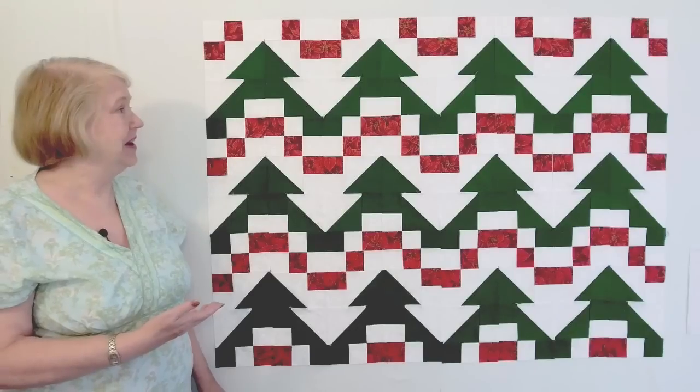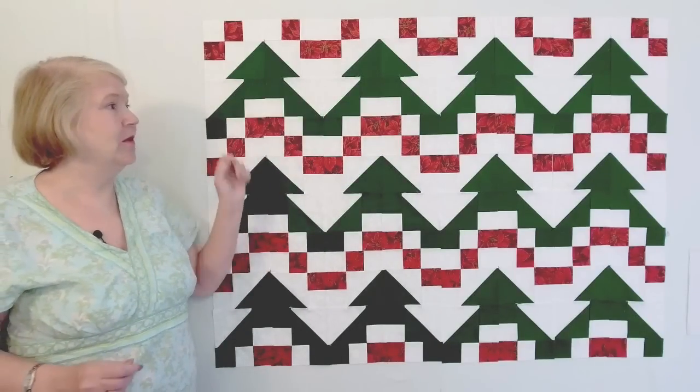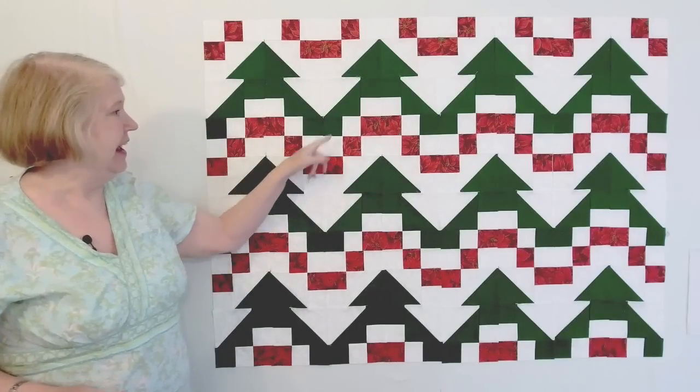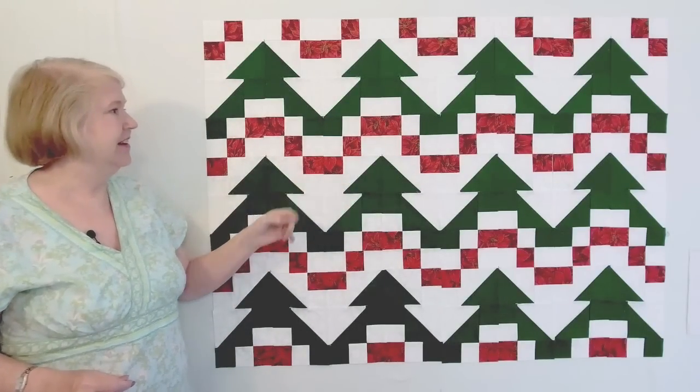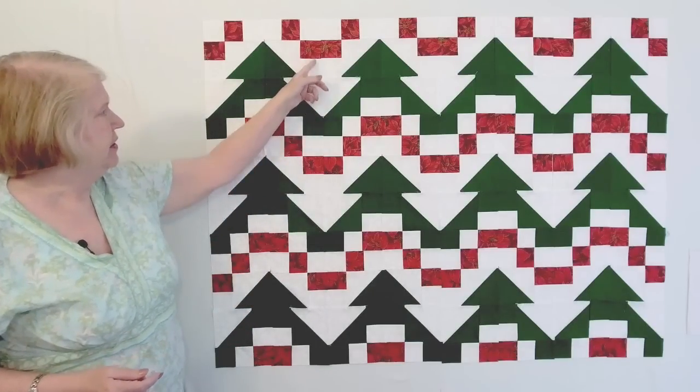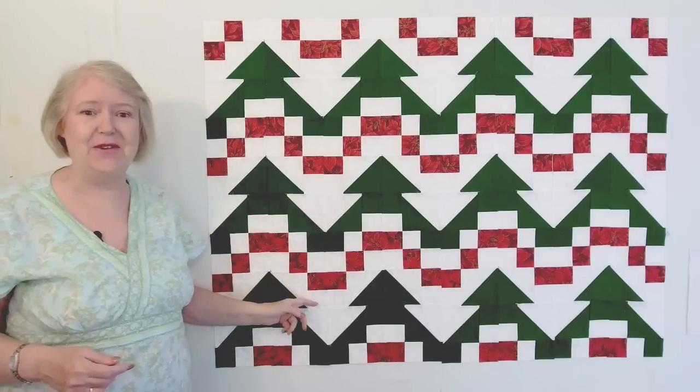Here's layout one. Pretty nice, right? It's got a row of green Christmas trees and strings of either red lights or ornaments, whatever you want to think about it. You've got the white trees coming down.